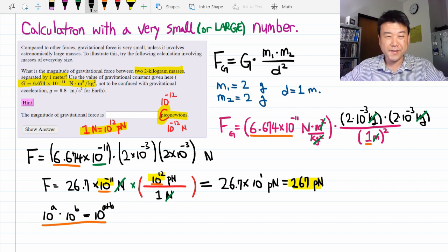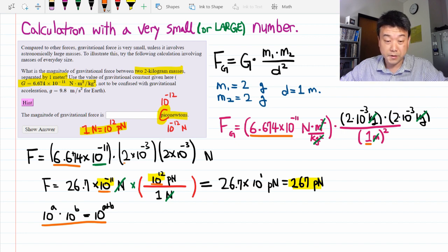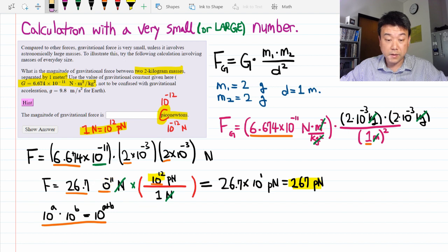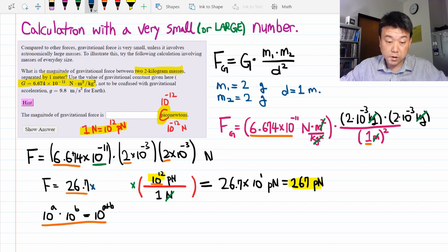All right, so here is where my advice is helpful. You multiply all the numbers that come before the powers of 10. That will give you this value from the start, 26.7. But what we need to figure out is what factor of 10 comes here. So multiplying together all the powers of 10, I have 10 to minus 11, minus 3, minus 3.